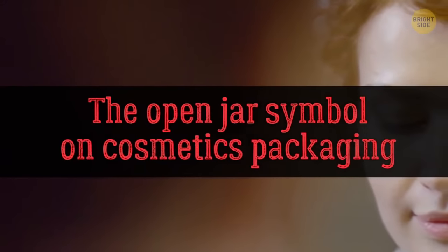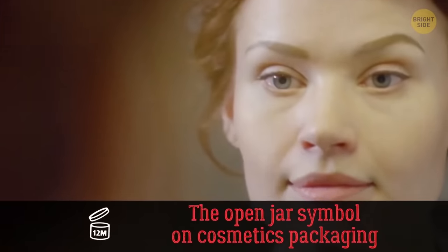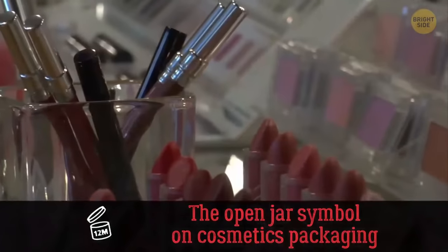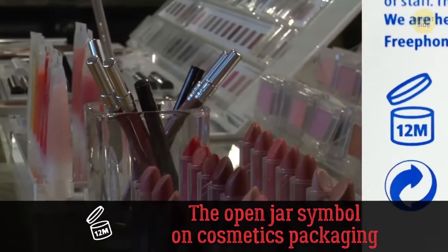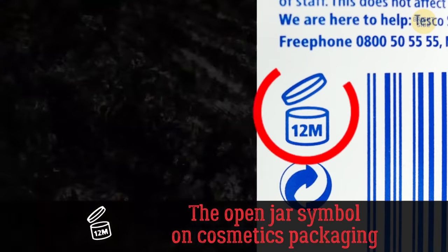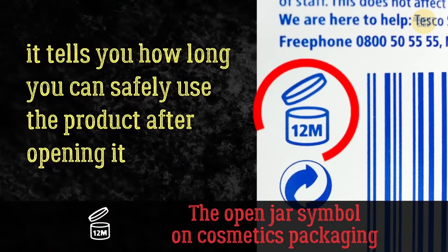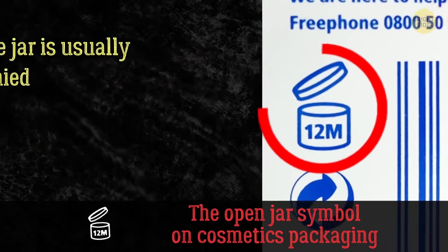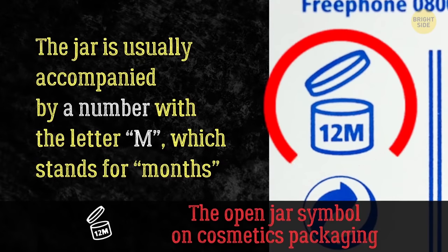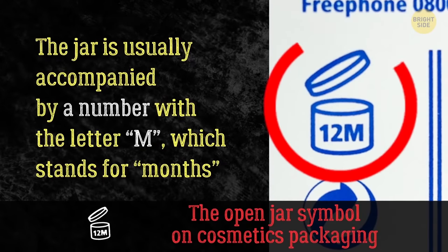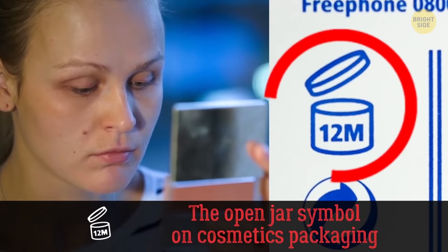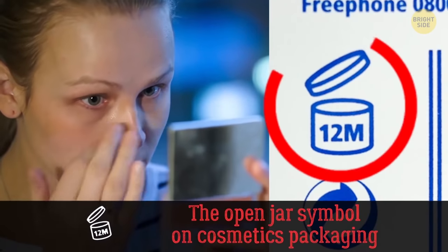Have you ever searched high and low for an expiration date on your makeup, all to no avail? In the future, just look for this little open jar icon. It's called the PAO, period after opening, and it tells you how long you can safely use the product after opening it. The jar is usually accompanied by a number with the letter M, which stands for months, and it can be seen on almost all cosmetics products. Just make sure you remember exactly when you open the package, so you'll know when 3, 6, 9, or however many months indicated have passed.